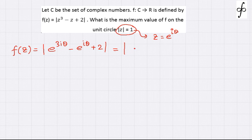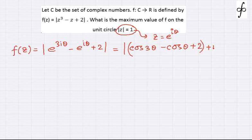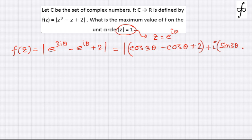As we know, e to the power 3iθ is nothing but cos 3θ plus i sine 3θ, and e to the power iθ is cos θ plus i sine θ. So we can easily write down this complex number in a + ib format. The real part will come out to be cos 3θ minus cos θ plus 2, and the imaginary part will come out to be sine 3θ minus sine θ.